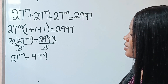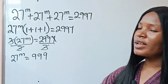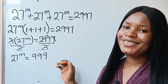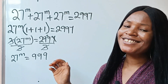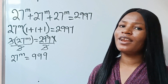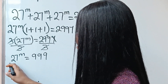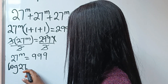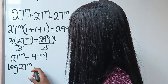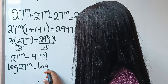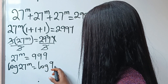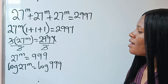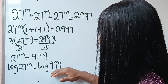Now let's continue. At this point the only thing we can do is introduce logarithms to this question. So let's introduce our life-saving log: log of 27 to the power of m is equal to log 999.